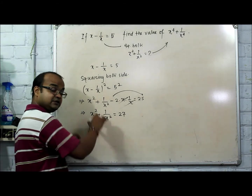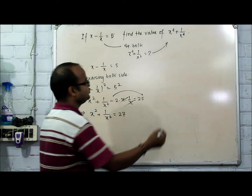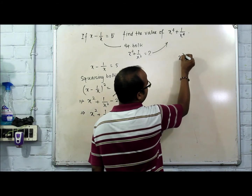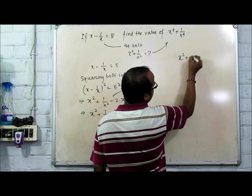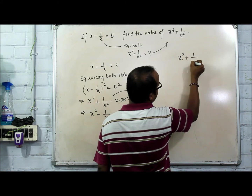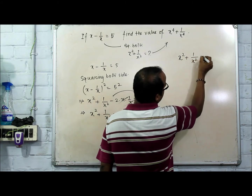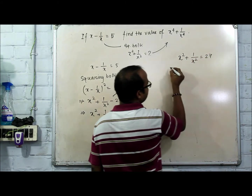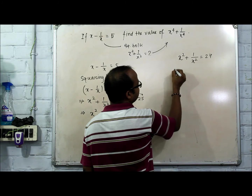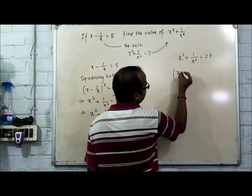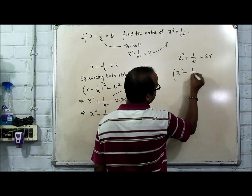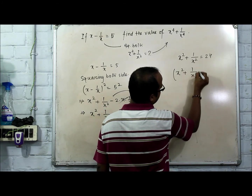Once we get x squared plus 1 by x squared equals 27, we again apply squaring both sides. So x squared plus 1 by x squared equals 27, and squaring both sides gives us x squared plus 1 by x squared, all squared.